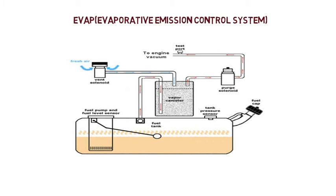The vapor canister is a small container which contains activated charcoal in it. Activated charcoal acts as a storage for the fuel vapors. When the fuel vapors enter the vapor canister, activated charcoal stores the fuel vapors inside it until the engine is warm and running. When the engine is started and warm, the purge solenoid creates a vacuum and siphons the fuel present in the vapor canister to the intake manifold, from where it is transferred to the engine, burned, and used to drive the vehicle.